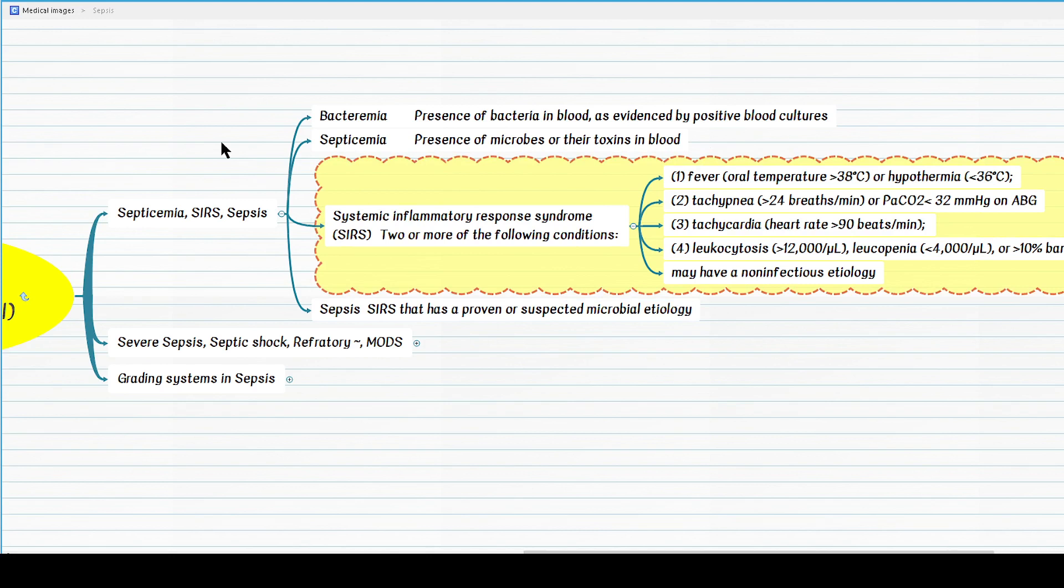Also remember that for the definition of SIRS, we do not include blood pressure abnormalities. You know why? Because that vital sign comes handy when we want to define septic shock.